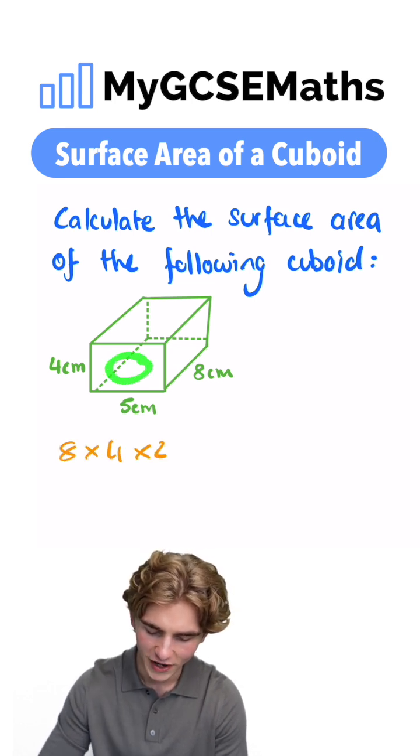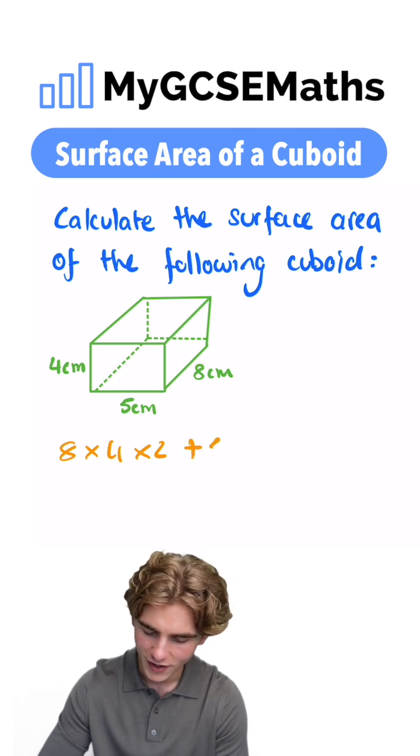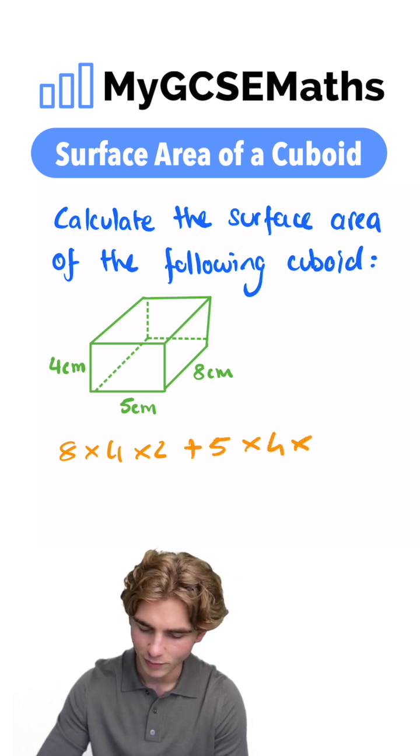This face here, again, we're going to have two of those. We have five times by four times by two. So five times by four times by two.